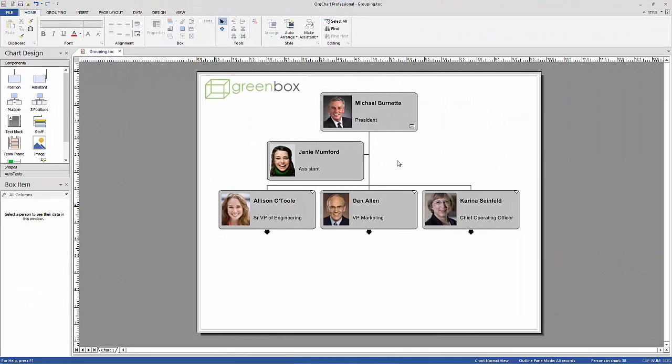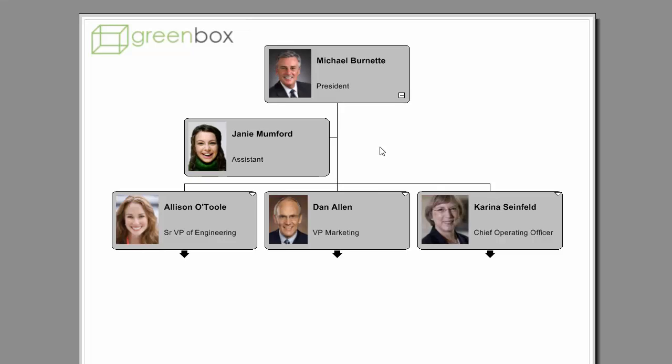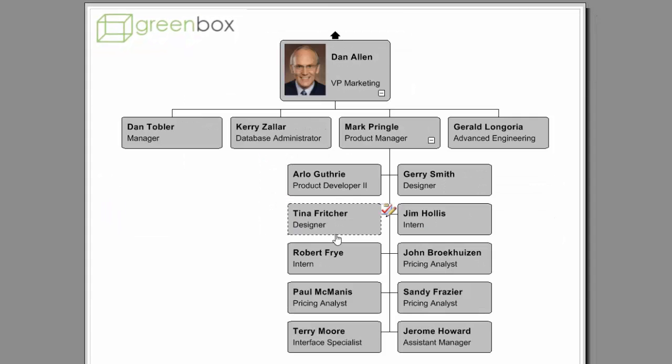The grouping feature of OrgChart is a space-saving feature that enables you to group multiple boxes with the same credentials together in a vertical style. This can be achieved during the import process for your entire chart, or manually for a specific division or selected boxes.